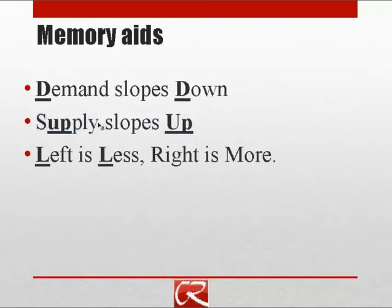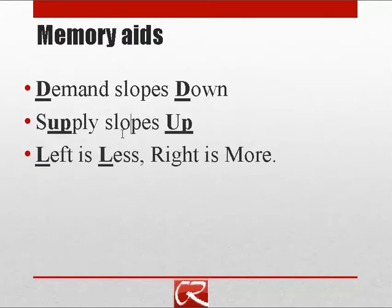Supply slopes up — so both supply and demand have the word 'up' in them, which hopefully will keep your supply curve pointing the correct way. The upward slope of the supply curve represents the fact that if you offer suppliers a higher price, they will be willing to sell you more units. If we drew a downward sloping supply curve, we'd be saying that as you offer sellers a higher price, they were willing to sell fewer units, which wouldn't make sense. So make sure your demand curve is downward sloping and your supply curve is upward sloping.